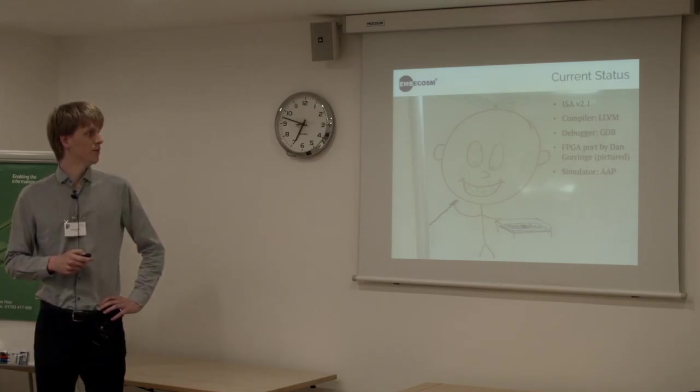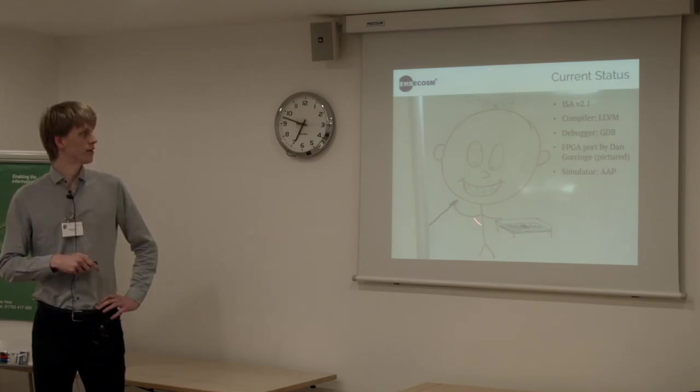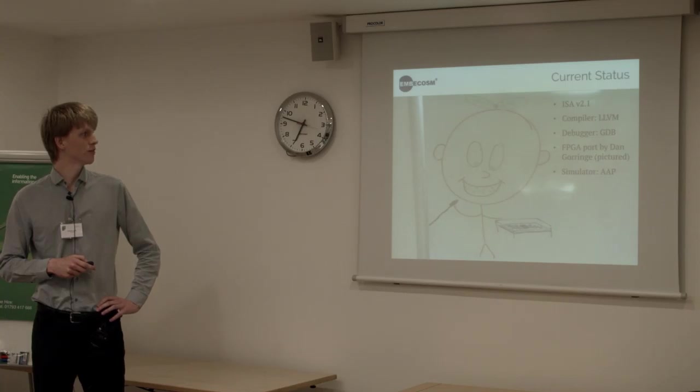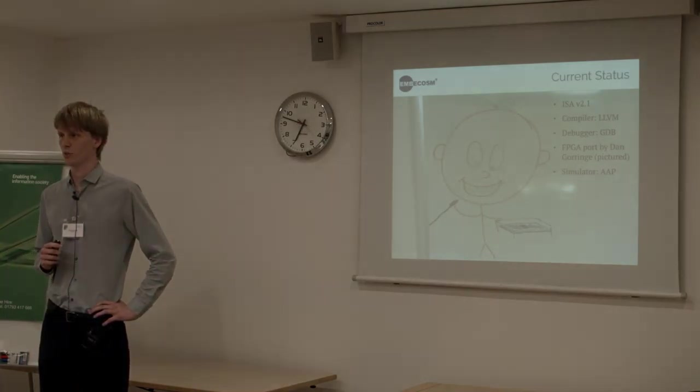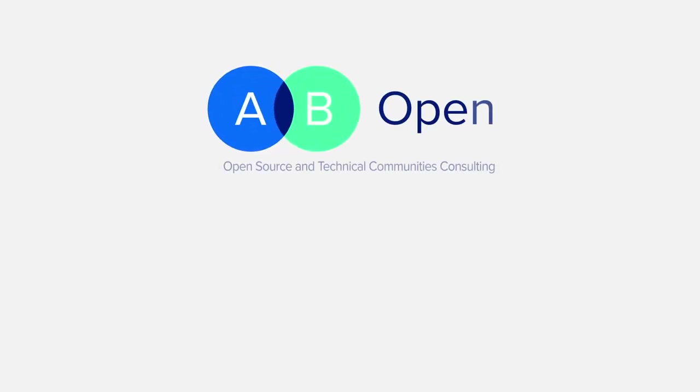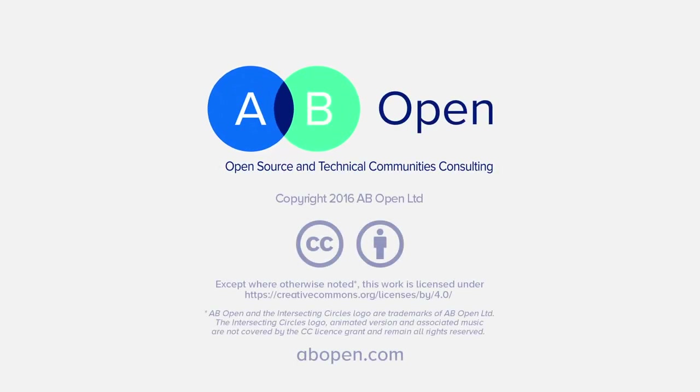So the current state of things - we've got our ISA in version 2.1. We've made a few changes. They're mainly relatively small changes. And we've got a compiler, which is Clang LLVM based. We've got a basic debugger. We've obviously got this FPGA implementation. And sadly, we don't have a portrait of Dan, but he left this on the whiteboard for us. And we've got the simulator, which Simon's going to talk about now.